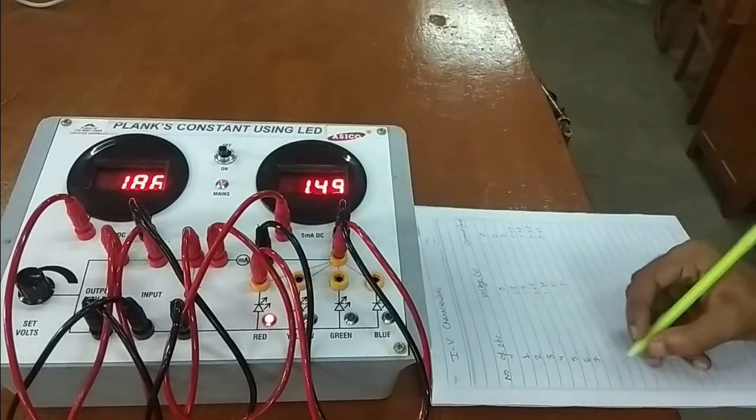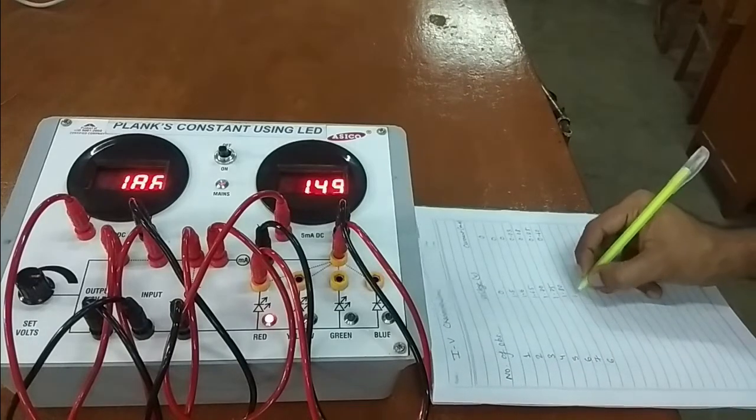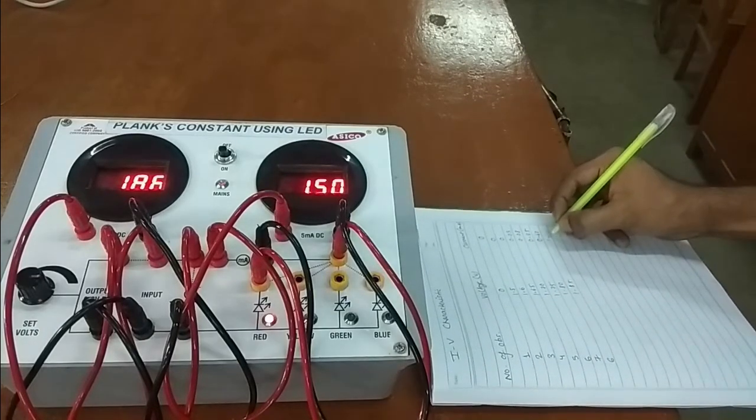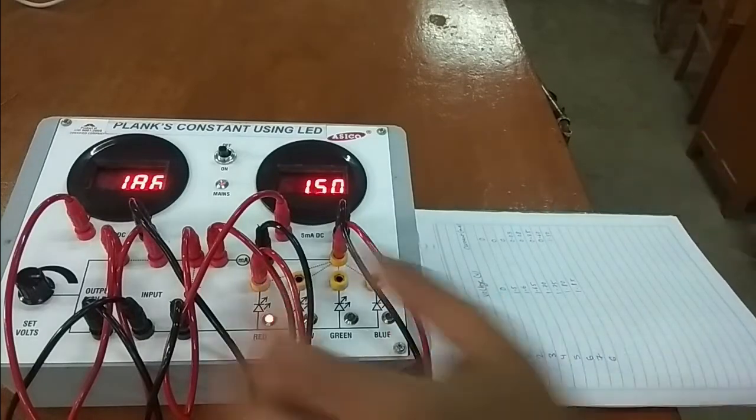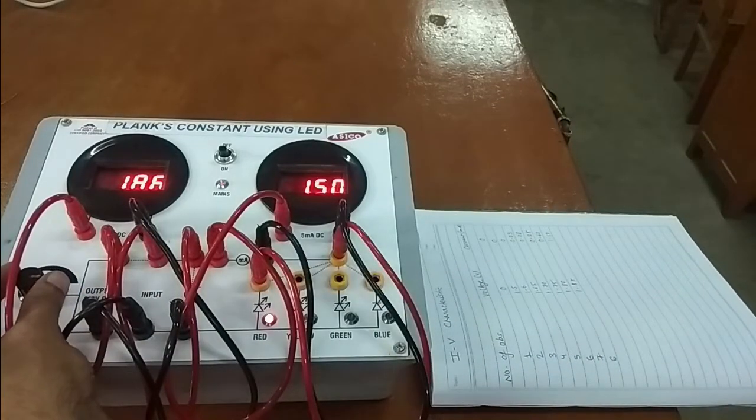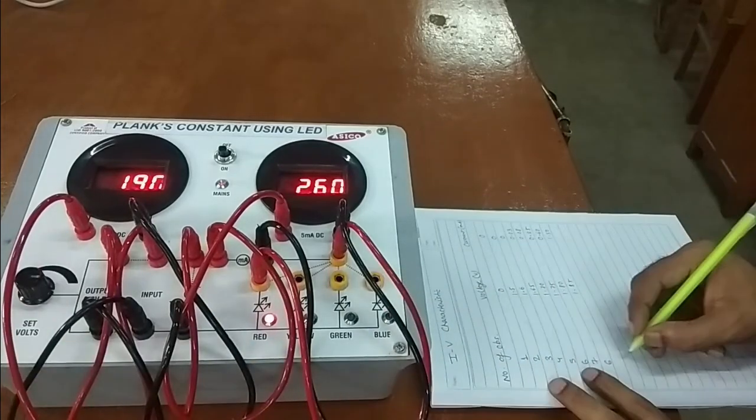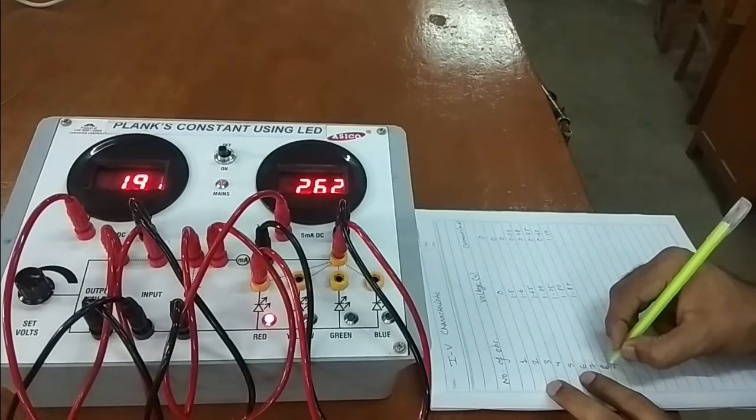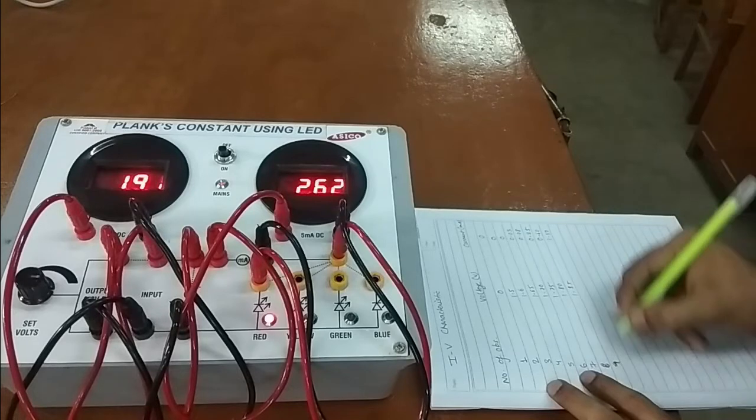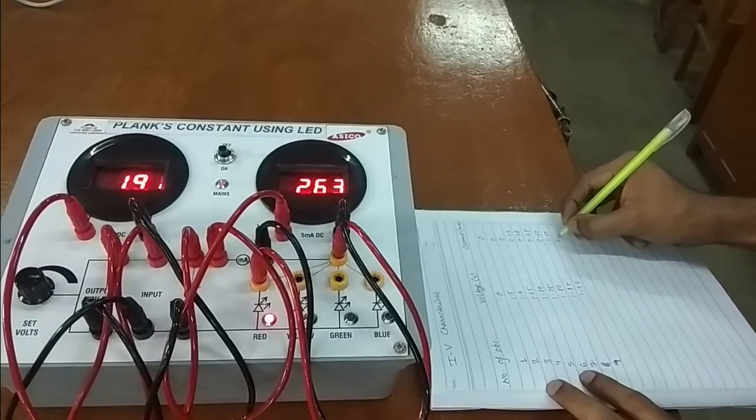Observation number 8, 1.85 and current is 1.50. Now move it to 1.9. Make it 1.9 and note down the current. Here the voltage is 1.90 and current is 2.63.